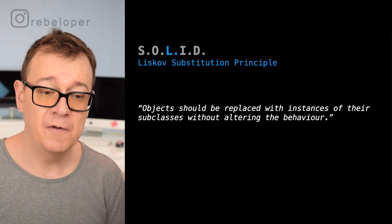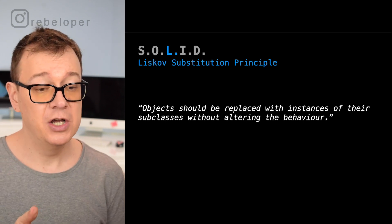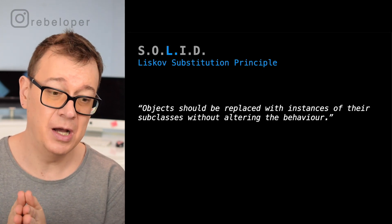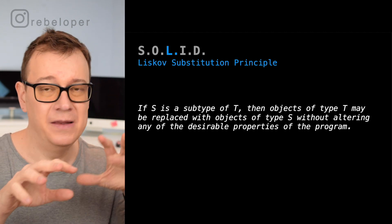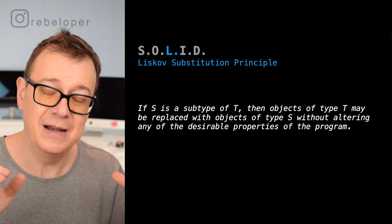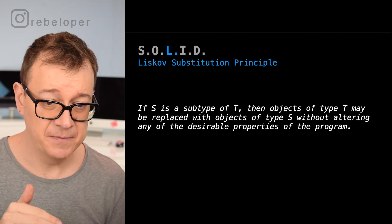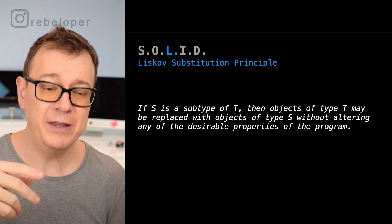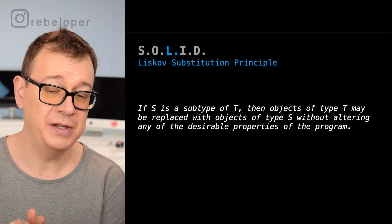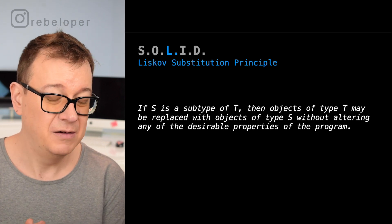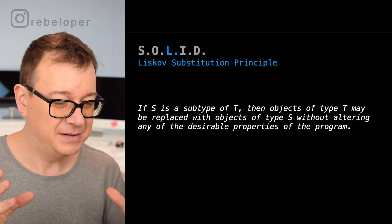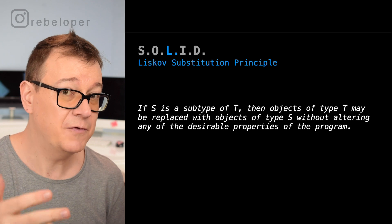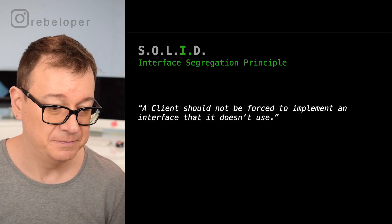L stands for Liskov Substitution Principle. Objects should be replaceable with instances of their subclasses without altering the behavior. If S is a subtype of T, then objects of type T may be replaced with objects of type S without altering any desirable properties of the program. It's a bit cryptic, but read it a few more times and you will understand it — and of course we'll have a full example in the series.